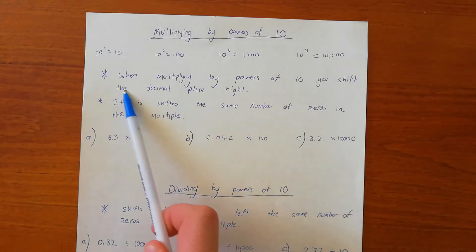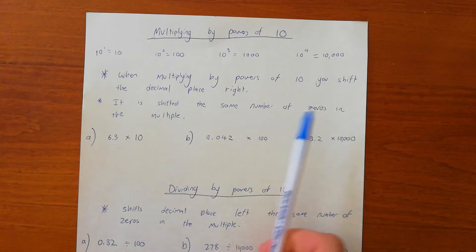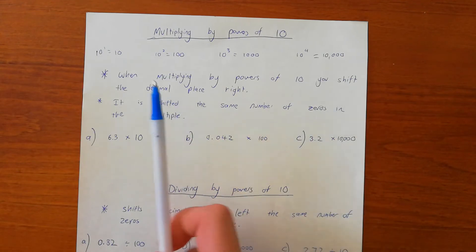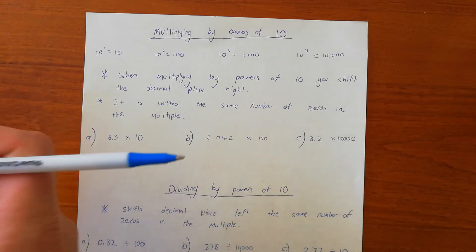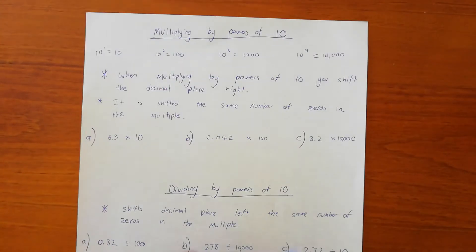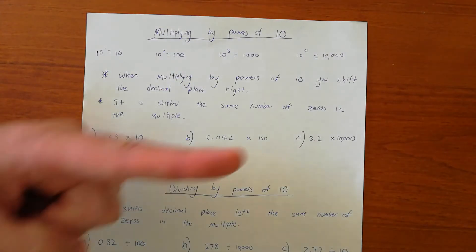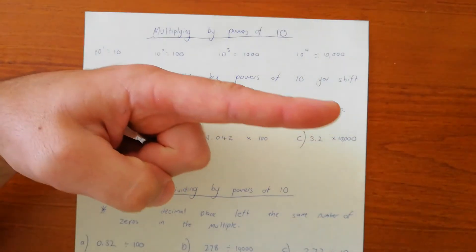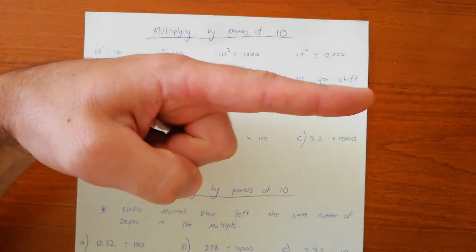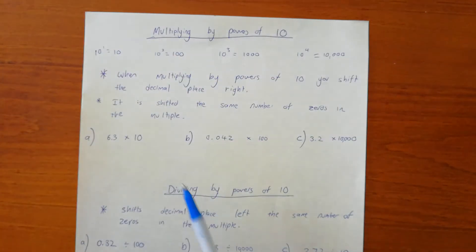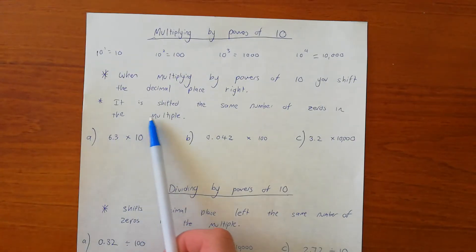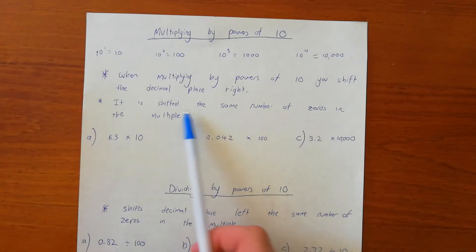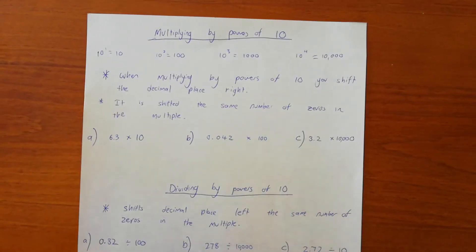Whenever we're multiplying a number by a power of 10, we're shifting the decimal place to the right — that way — the same number of places as there are zeros in the multiple.